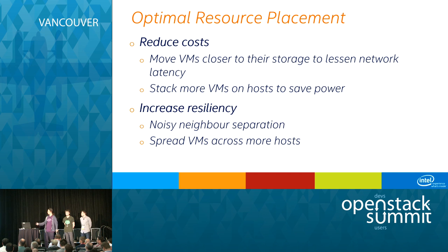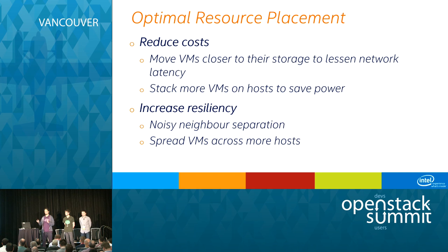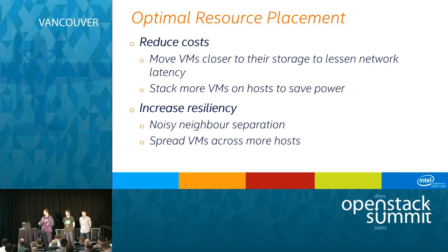On the other hand, you can increase resiliency of your cluster. Noisy neighbor separation is one example — a noisy neighbor is a virtual machine that consumes unshareable resources, for example CPU cache. You can't put a quota on CPU cache, so if one VM consumes all of it, it may impact performance on other VMs on the same node. You might want to separate that problematic VM. Or you can spread your workload across as many hosts as possible, so a failure of a single node will cause less damage.